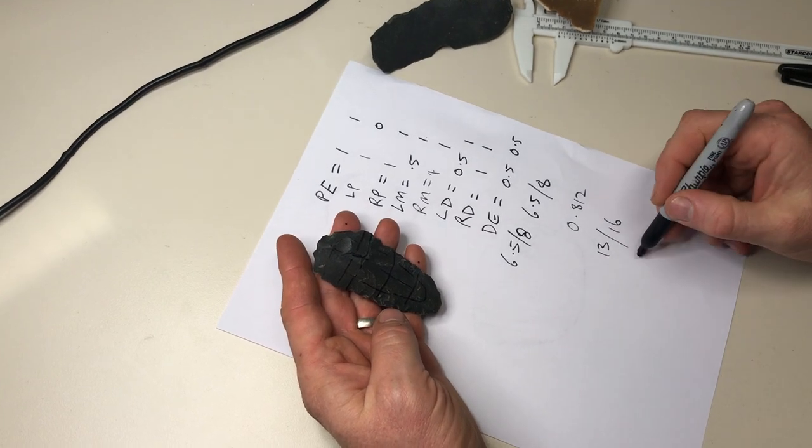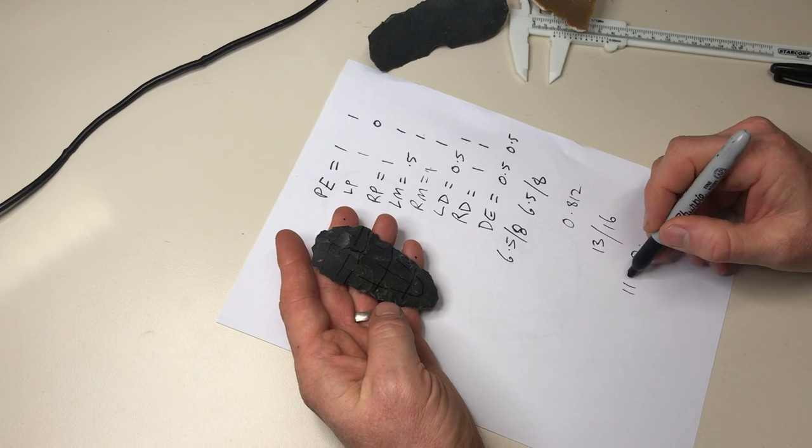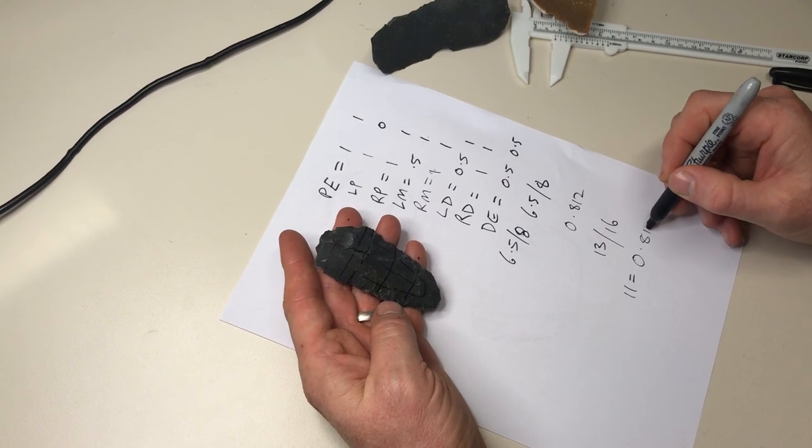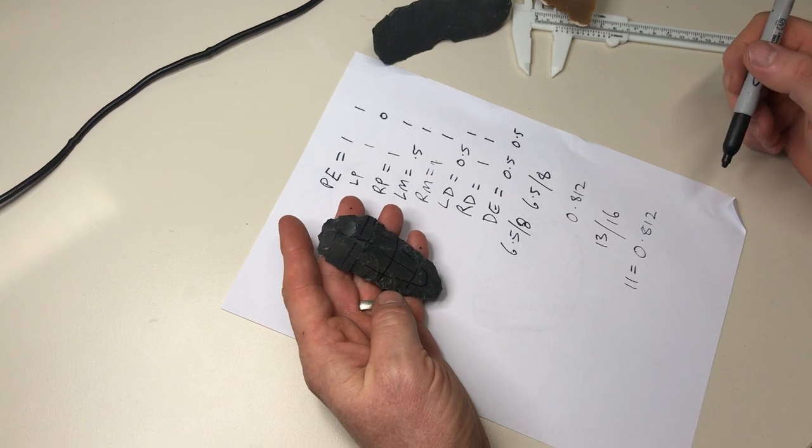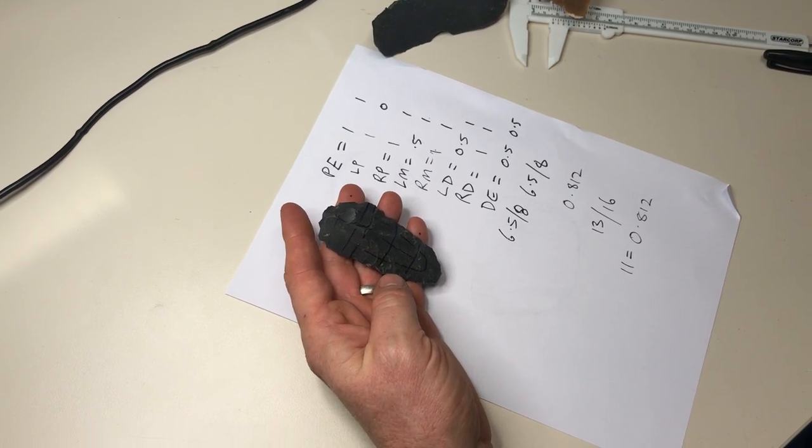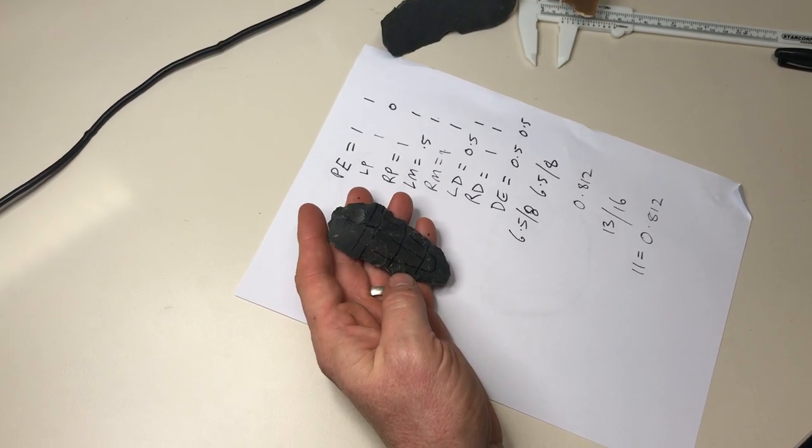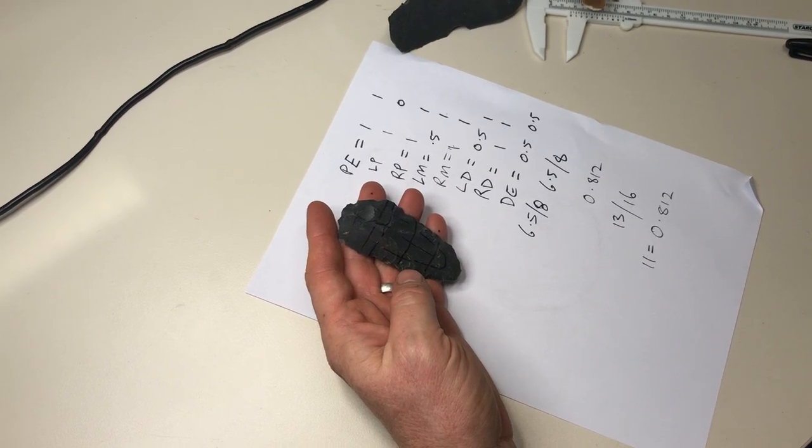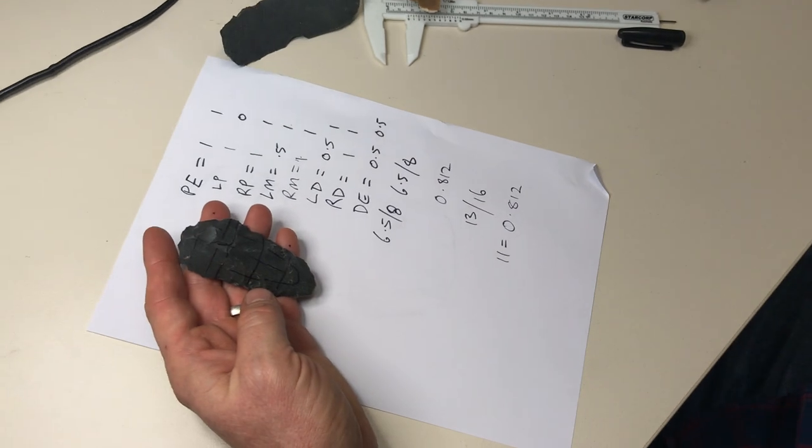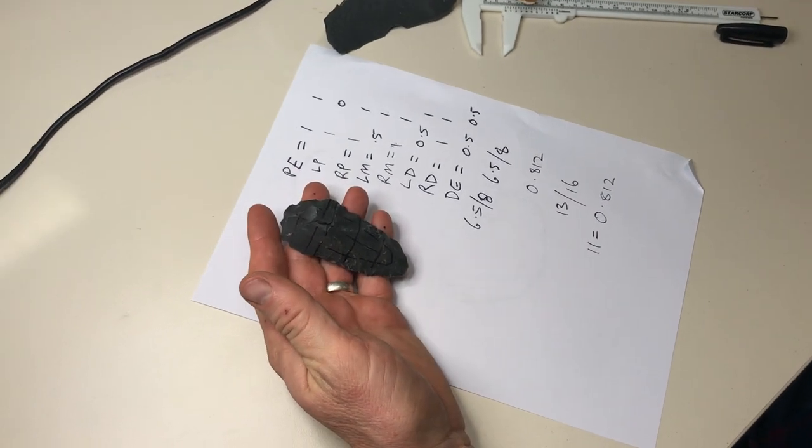So our index of invasiveness, II, equals 0.812. So that's how we calculate index of invasiveness, and your spreadsheet has got all of those zones in it: left proximal, right proximal, and so on for the distal and for the dorsal and the ventral. So you just go through and type in 0, 1, 1 and so on, and it'll calculate the index of invasiveness for you.